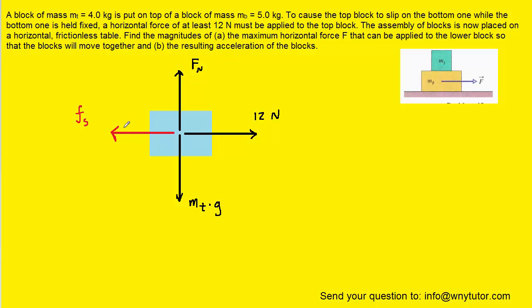What we can see from this free body diagram is that the maximum static frictional force on the top block is going to be the 12 Newtons. Anything greater than the 12 Newtons would cause the top block to slip. So hopefully it's clear that F sub S is going to equal 12 Newtons.